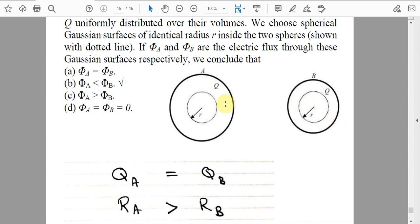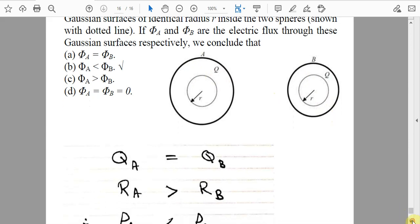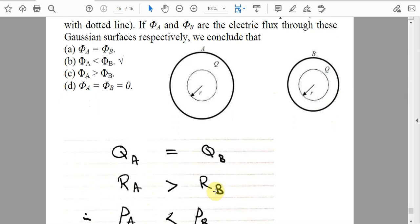Since R_A is greater than R_B and the charges are equal, we can determine that the charge density ρ_A is less than ρ_B.